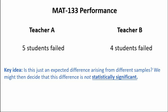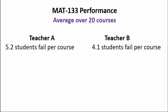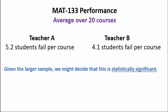Let's look at another example. Instead of looking at one course, suppose we look at the average over 20 courses for both instructors. If Teacher A has 5.2 students fail per course on average over 20 courses, whereas Teacher B has only 4.1 students fail per course on average over 20 courses, then given the larger sample we might say this is statistically significant. What is Teacher B doing that Teacher A isn't doing, or vice versa?